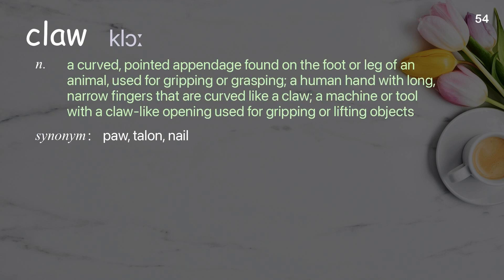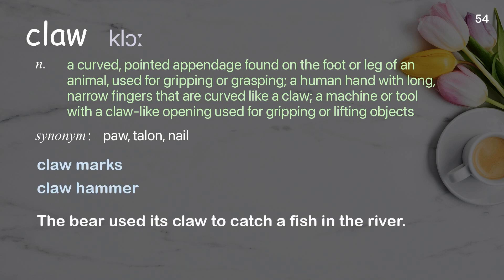Claw: a curved, pointed appendage found on the foot or leg of an animal, used for gripping or grasping; a human hand with long, narrow fingers that are curved like a claw; a machine or tool with a claw-like opening used for gripping or lifting objects. Examples: claw marks, claw hammer. The bear used its claw to catch a fish in the river.